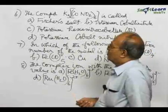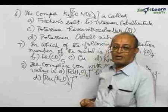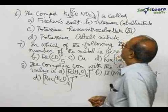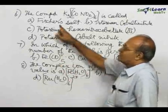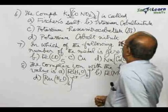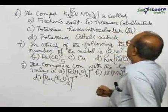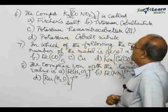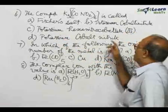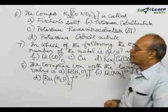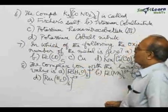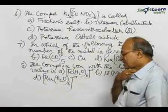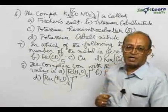Four answers are given - of these four, which one or which are correct? (a) Fischer's salt, (b) Potassium cobaltnitrite, (c) Potassium hexanitrocobaltate(III), (d) Potassium cobaltnitrite.